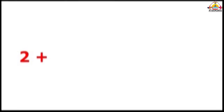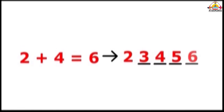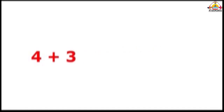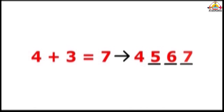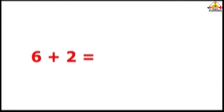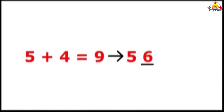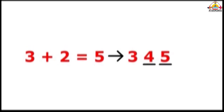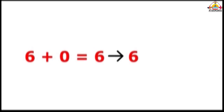Adding by row method. 2 plus 4 is equal to 6, 3, 4, 5, 6. 1 plus 2 is equal to 3, 2, 3. 4 plus 3 is equal to 7, 5, 6, 7. 6 plus 2 is equal to 8, 7, 8. 5 plus 4 is equal to 9, 6, 7, 8, 9. 7 plus 1 is equal to 8. 3 plus 2 is equal to 5, 4, 5. 6 plus 0 is equal to 6. 2 plus 5 is equal to 7, 3, 4, 5, 6, 7. 1 plus 1 is equal to 2.